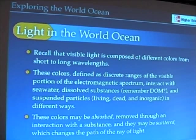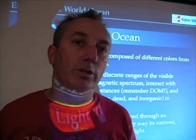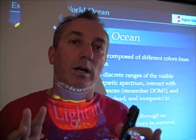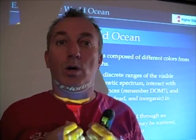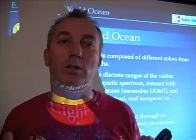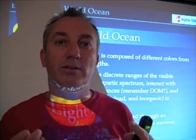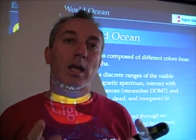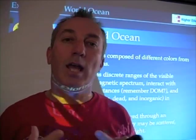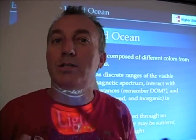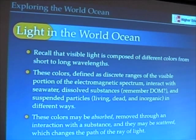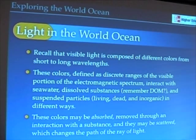Next we want to talk about light in the world ocean and what happens to light as it penetrates into the world ocean. If you recall from our earlier segment, the color of an object depends upon what it absorbs or reflects. In talking about the color of the world ocean, we want to look at things that absorb light and remove those colors, and alternatively which colors are left over after those things in the water — or even the water itself — absorb those colors. Anything that interacts with the visible part of the electromagnetic spectrum is going to change both the intensity of light as it penetrates into the water column and also the color of light.